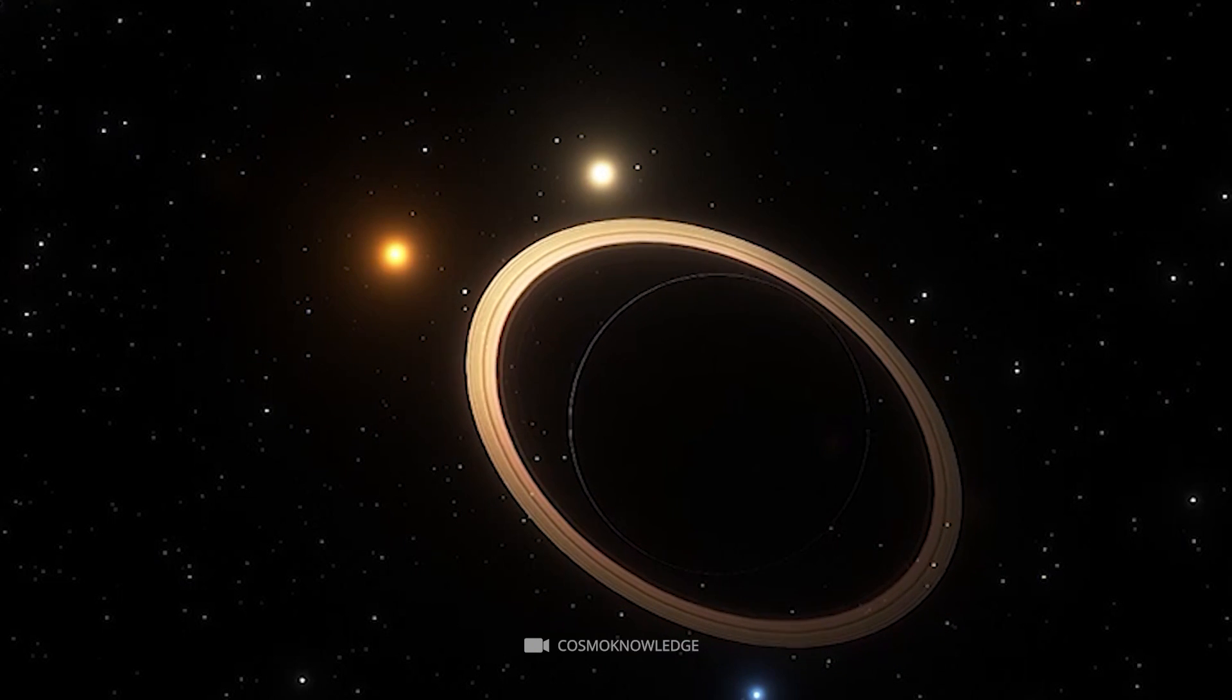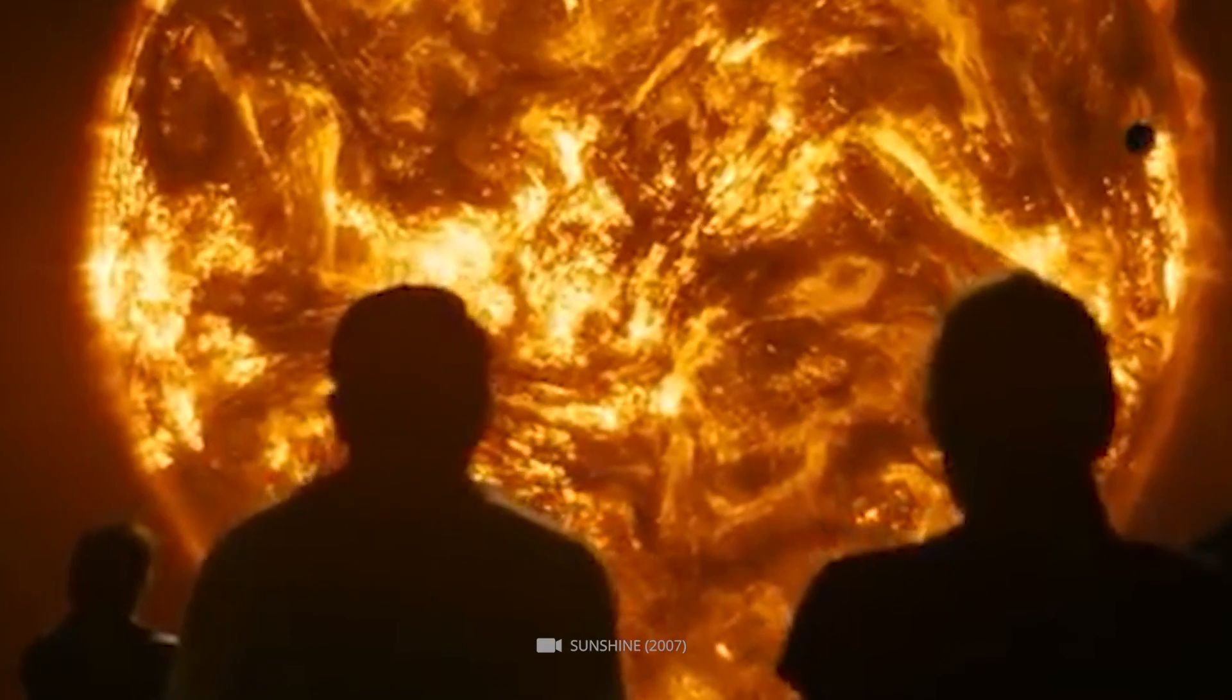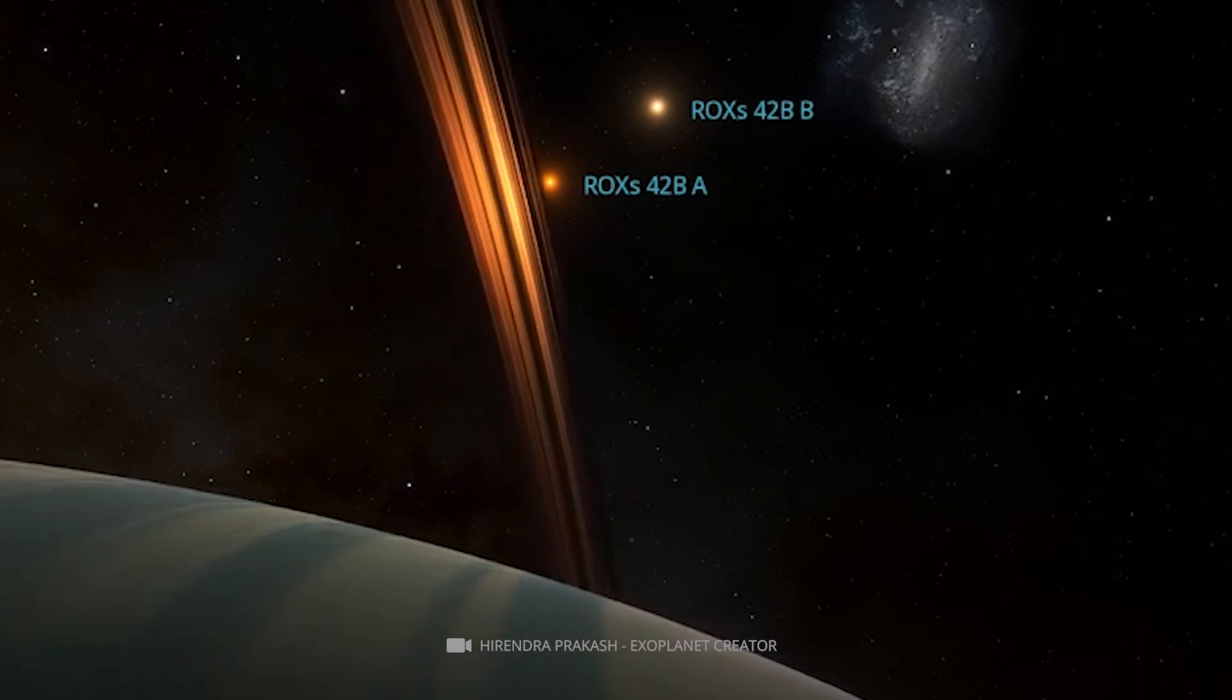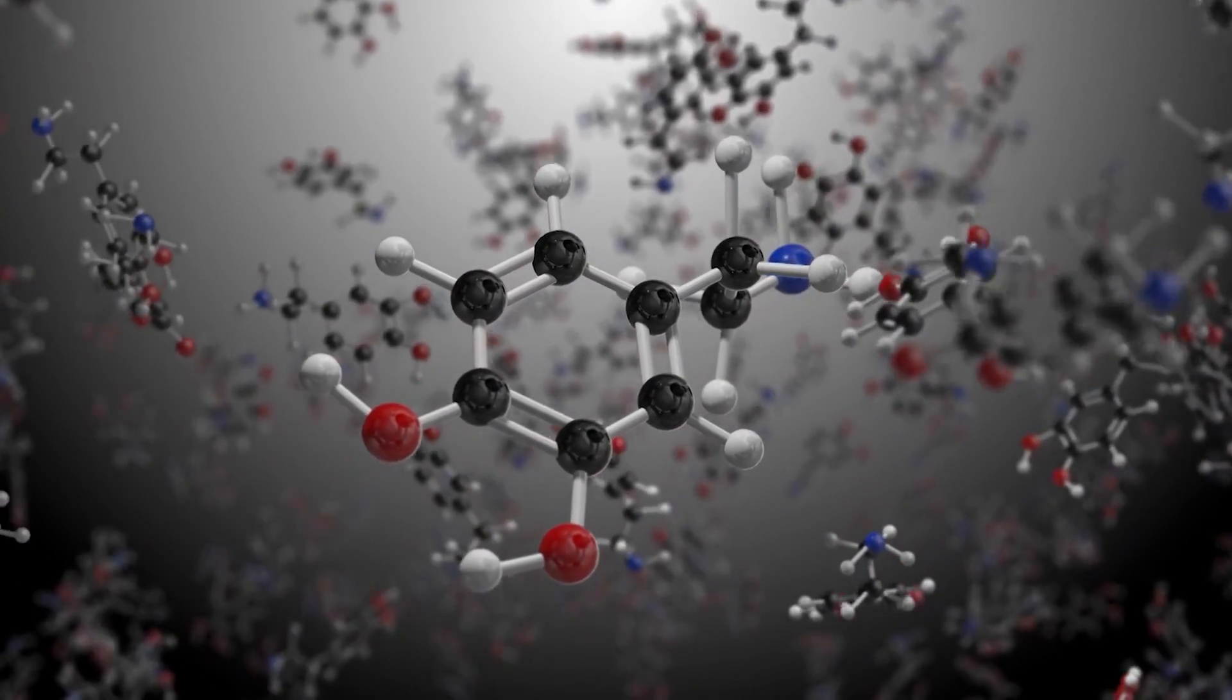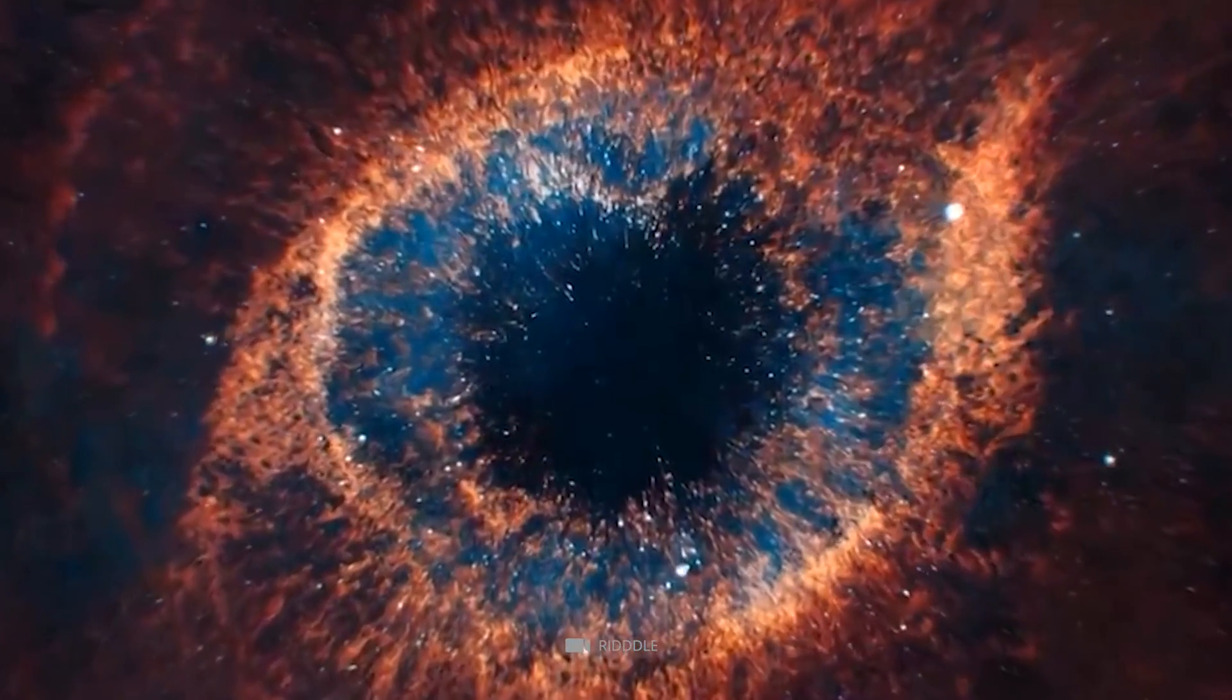Despite its massive size, ROX 42BB is located very close to its star, ROX 42A, orbiting at a distance of just 0.06 astronomical units. For comparison, this is about the same distance Mercury orbits our Sun. Composition-wise, ROX 42BB is thought to be composed primarily of hydrogen and helium, the two most abundant elements in the universe.